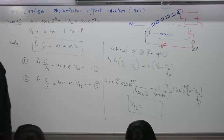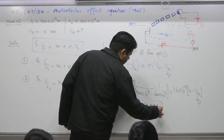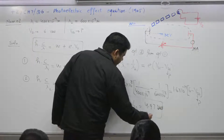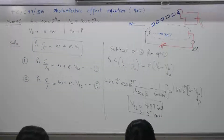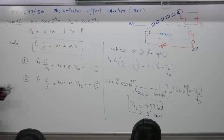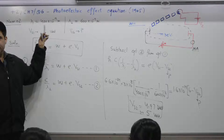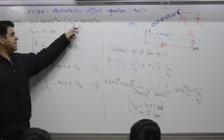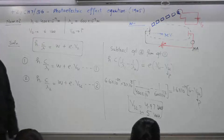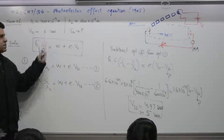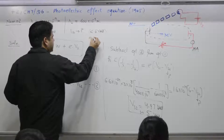The answer is approximately 4.97 volts — you can say approximately 5 volts. In the second experiment, the wavelength was increased, which means frequency decreased, so the packet size is smaller. Therefore the stopping potential will also be less. The answer must be less than the first case of 6 volts, and the correct answer is 5 volts.